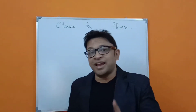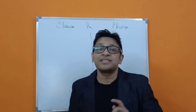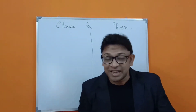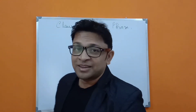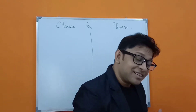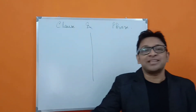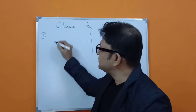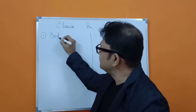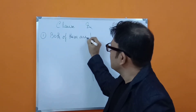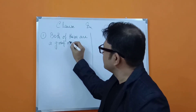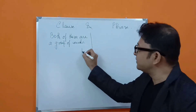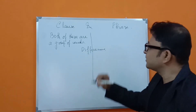A single clause can stand in a sentence, but a single phrase cannot make a sentence. Without a clause a sentence cannot give its proper meaning. A phrase adds some meaning to the sentence but it alone cannot make a sentence. So these are the key differences you have to know. Both a clause and a phrase are a group of words, but they have some differences.